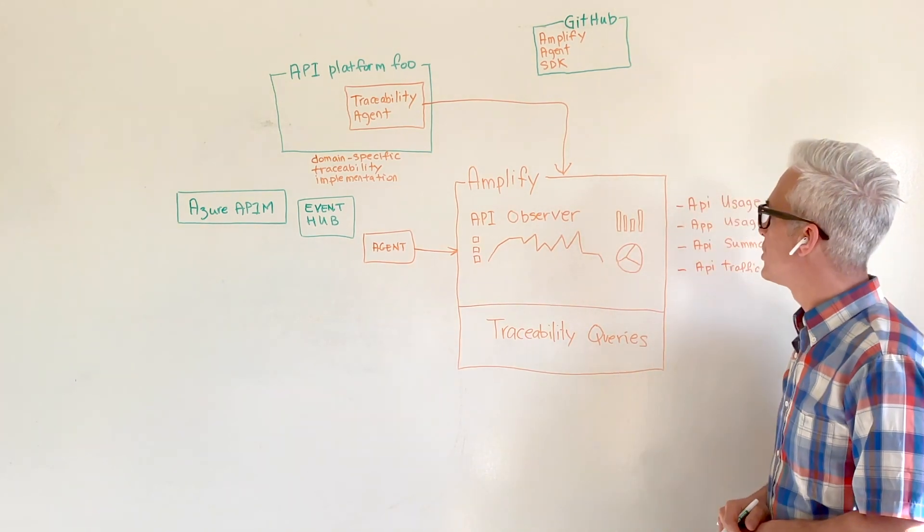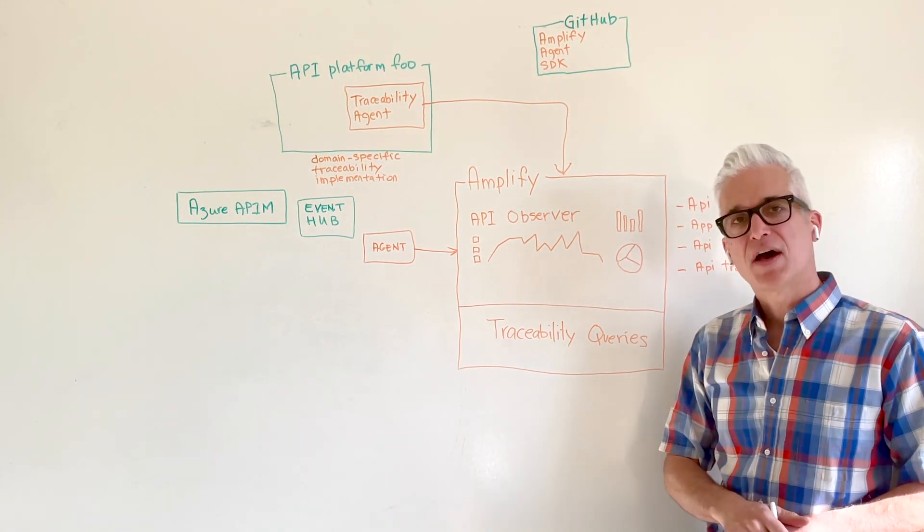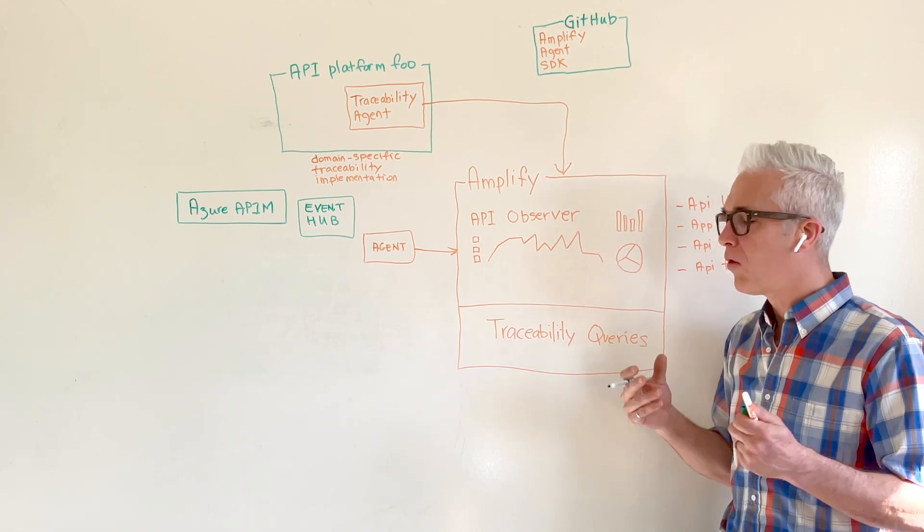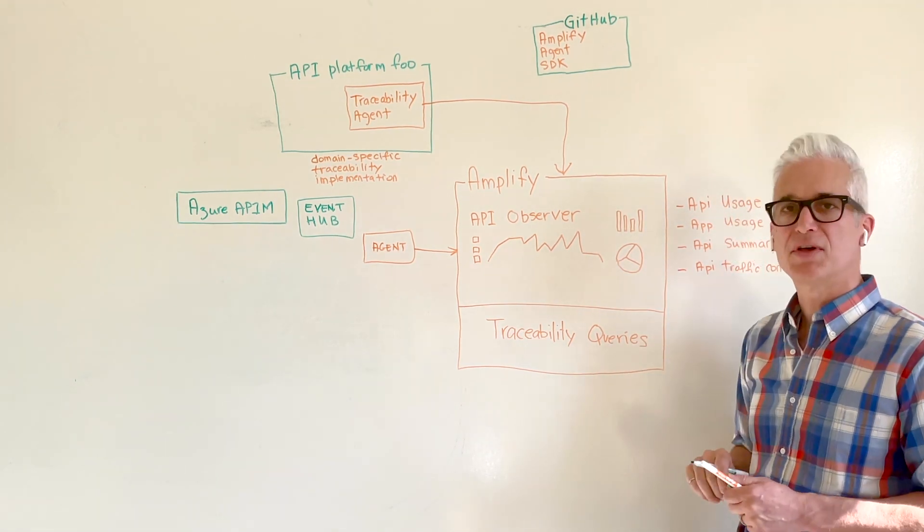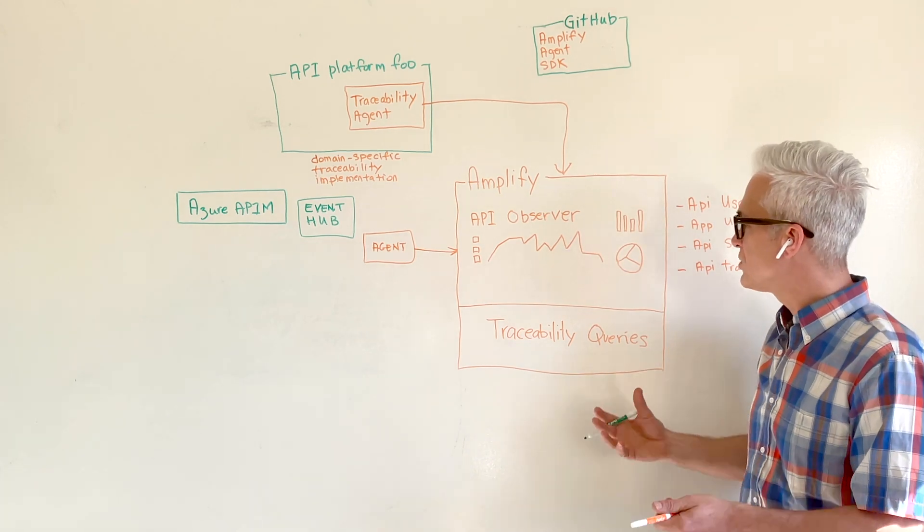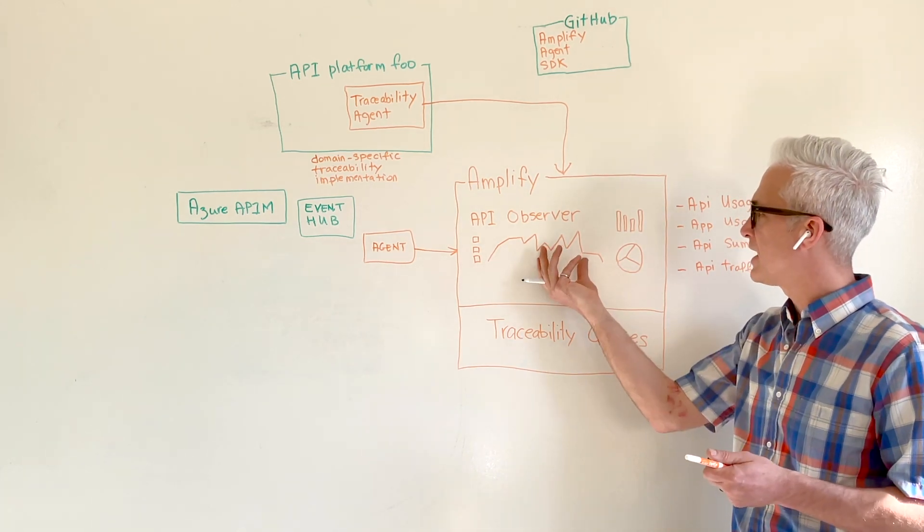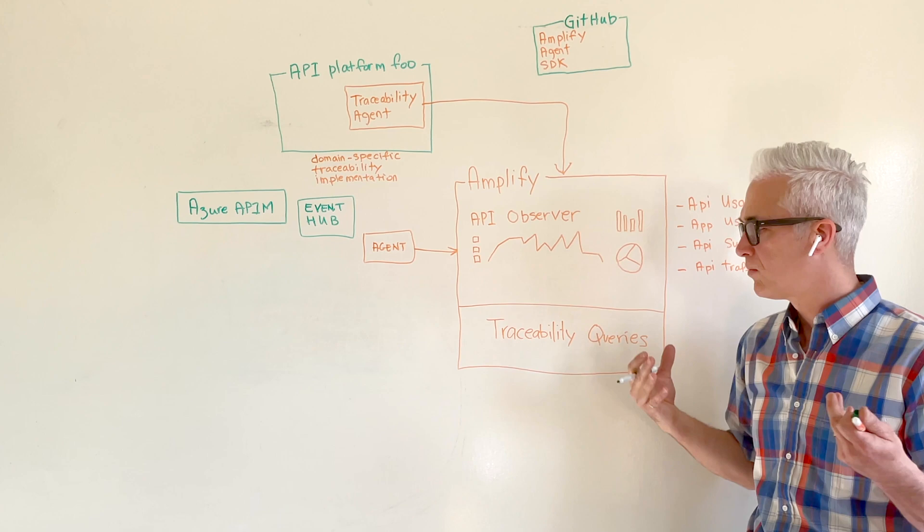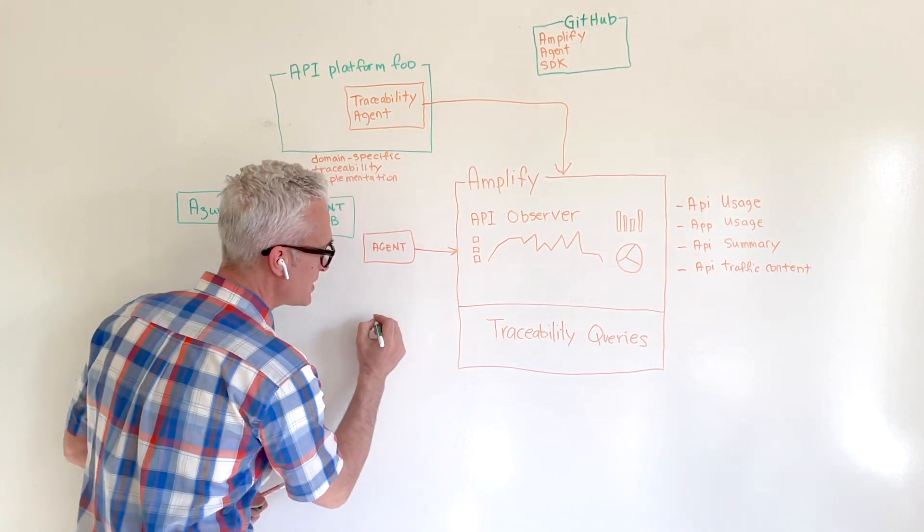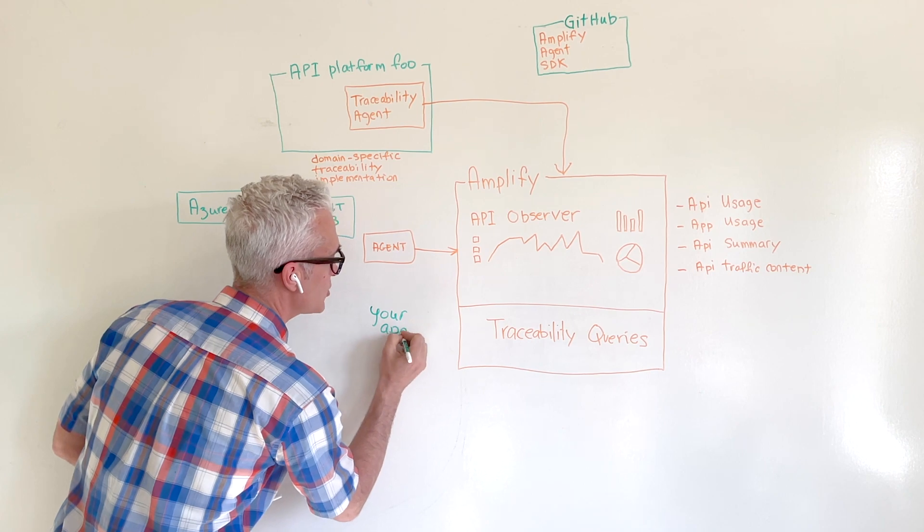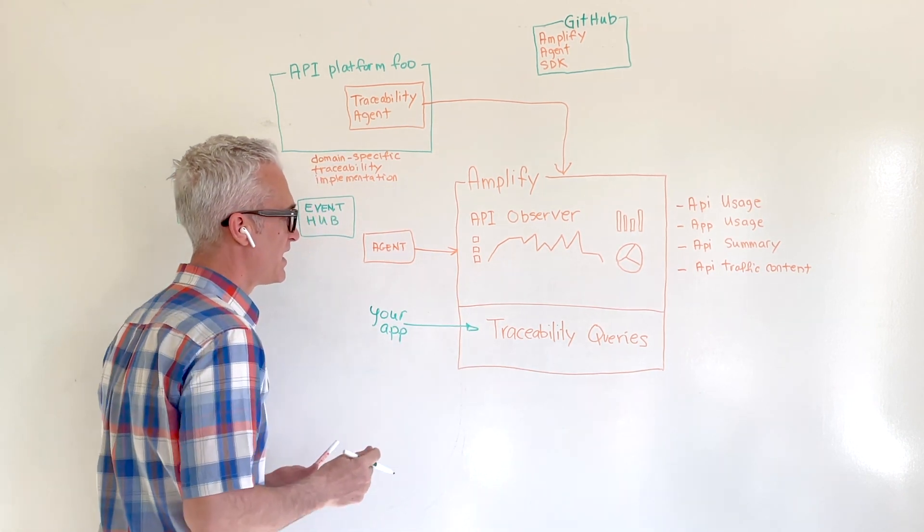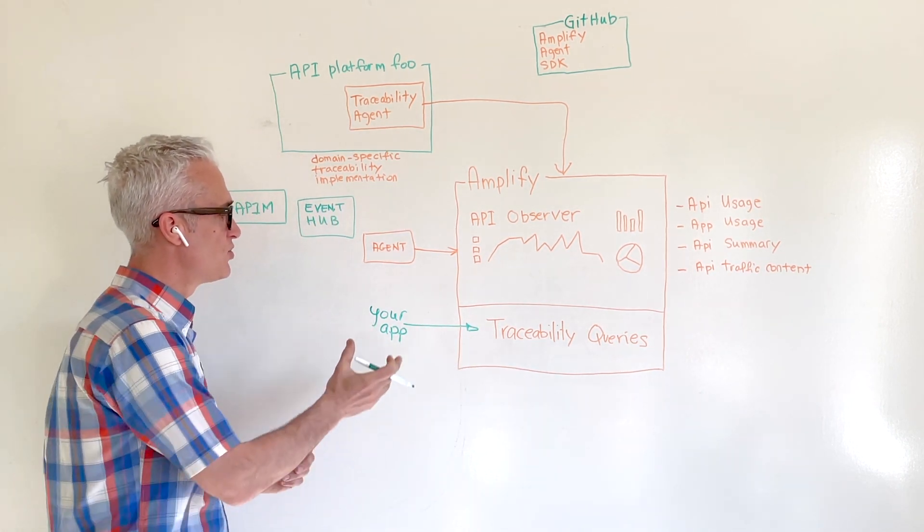And so one more way in which Amplify API Observer is a more open API analytics platform. It's this traceability queries, which allows you to get to the same data that is displayed in API Observer, but programmatically. This allows you to use your own application in order to retrieve this data and feed it into your own application.